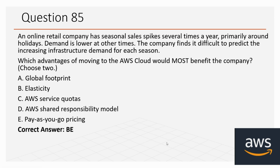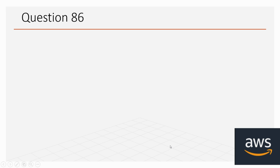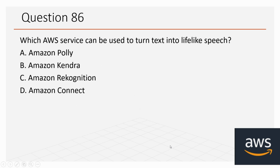Question number 86: Which AWS service can be used to turn text into lifelike speech? Options: A. Amazon Polly, B. Amazon Kendra, C. Amazon Rekognition, D. Amazon Connect. The correct option is A, Amazon Polly. You should have the idea about all the services and what kind of services perform what kind of tasks, in order to clear this particular exam.